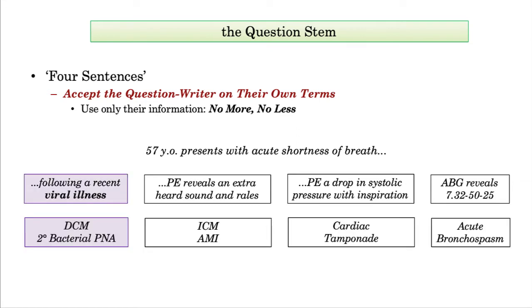With the mention of a recent viral illness, for instance, and no mention of chest pain, the writer is effectively excluding acute myocardial infarction or acute pericarditis, leaving us with the possibility of dilated cardiomyopathy or secondary bacterial pneumonia, such as staph pneumonia complicating influenza. By including an S3, described as an extra heart sound, plus rales, the writer effectively excludes pulmonary embolism.